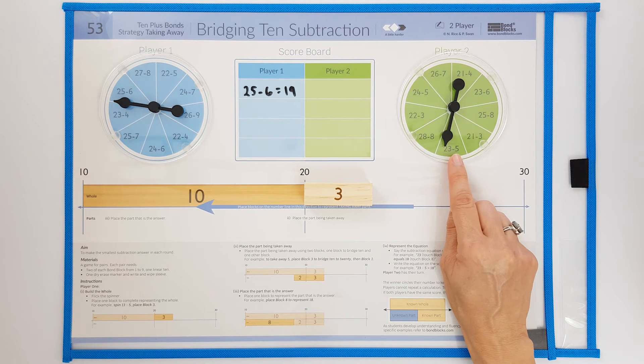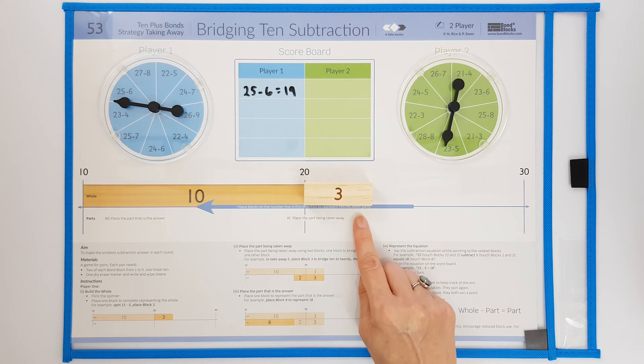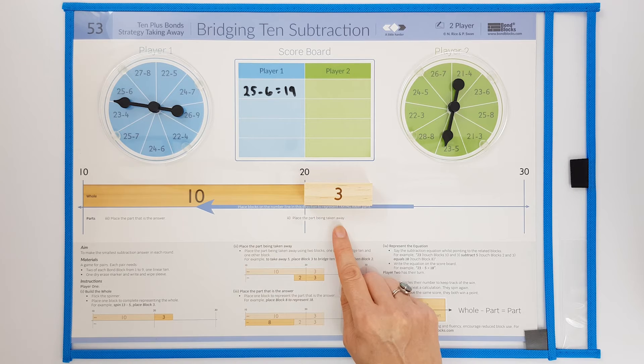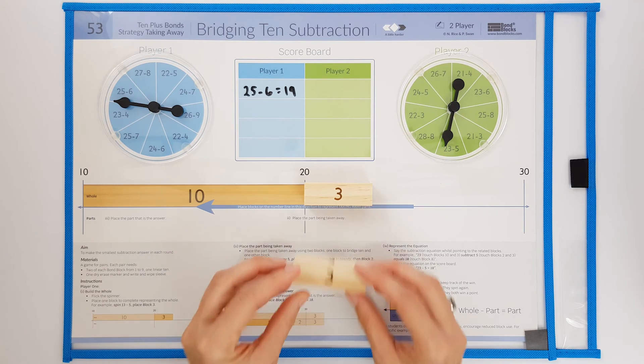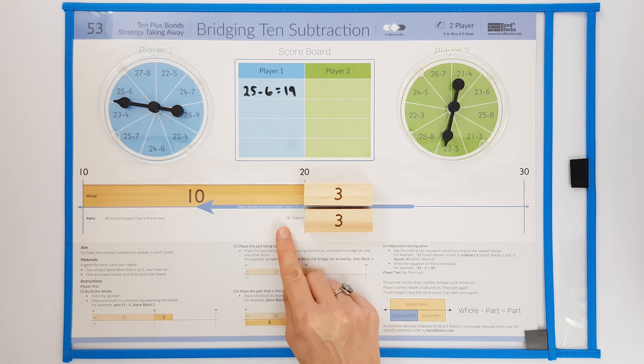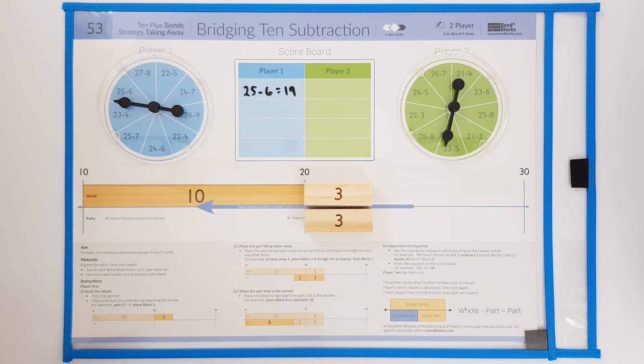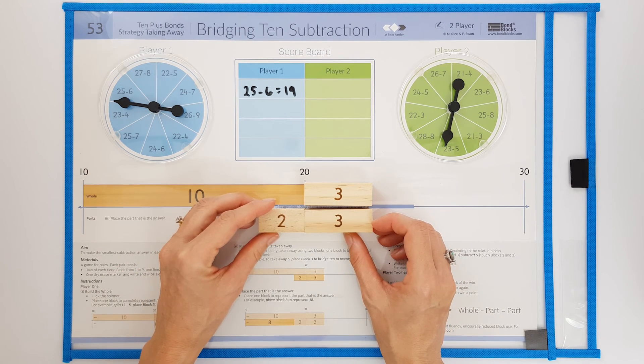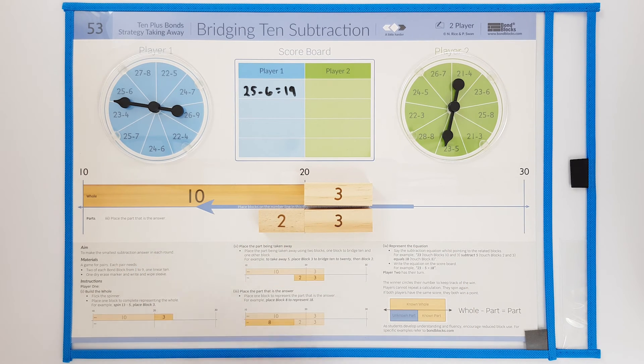They then take away the part of 5 in 2 blocks. First they take away 1 block to bridge 10 to 20, and then they complete taking away the part of 5. They then represent their answer by placing the 8 block.